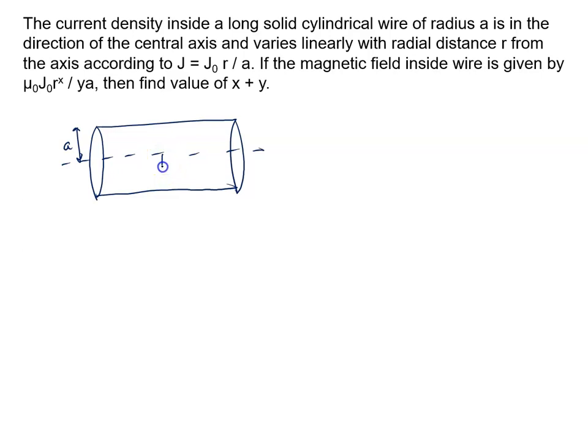Current density J changes, and the relation given is J equal to J₀ into r upon small a.